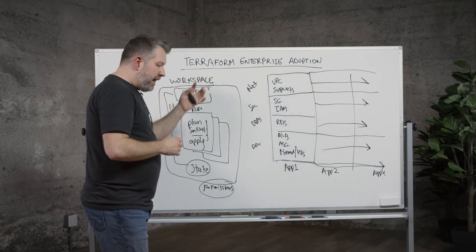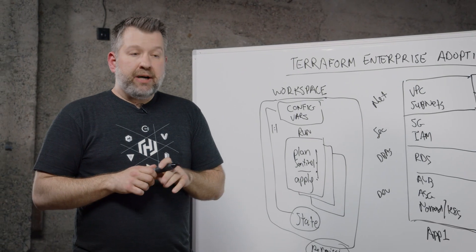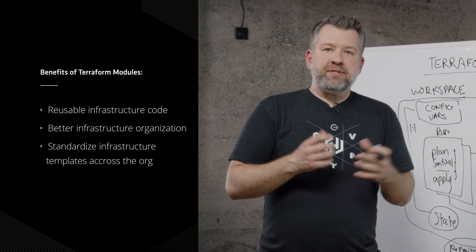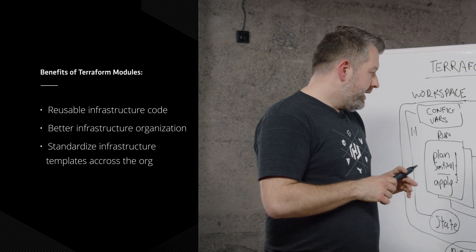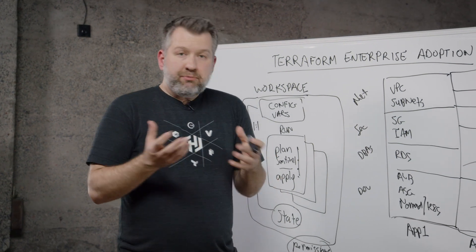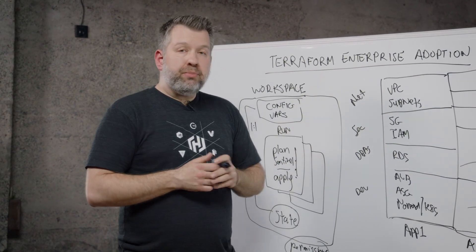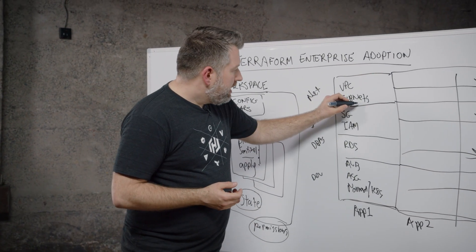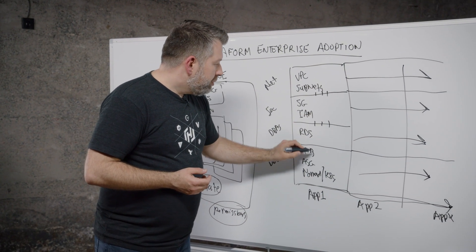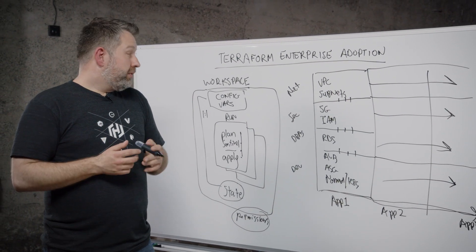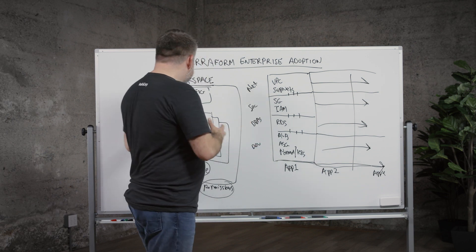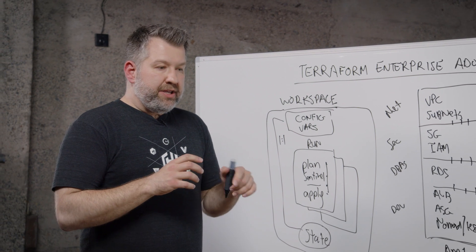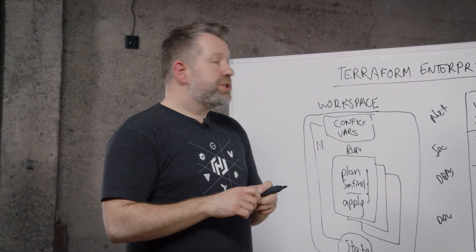Finally, the combination of configuration and variables raises the question of code reuse, and this is where we start thinking about modules. Think about how to encapsulate or group related functionality — if I'm deploying an application, I might need all of those resources as one module, and similarly for network components. As we evolve our use of modules, we can think about how to plug them together, developing an API contract of sorts — defining inputs and outputs between modules and using that to tie things together to avoid hard-coding values. This helps teams be more effective and drives adoption of Terraform Enterprise across the organization.